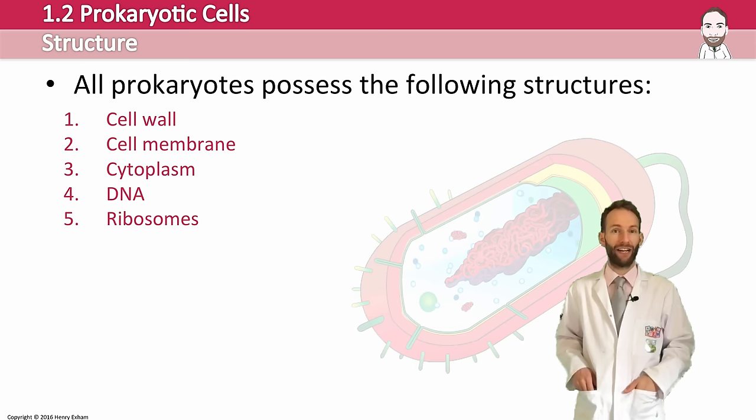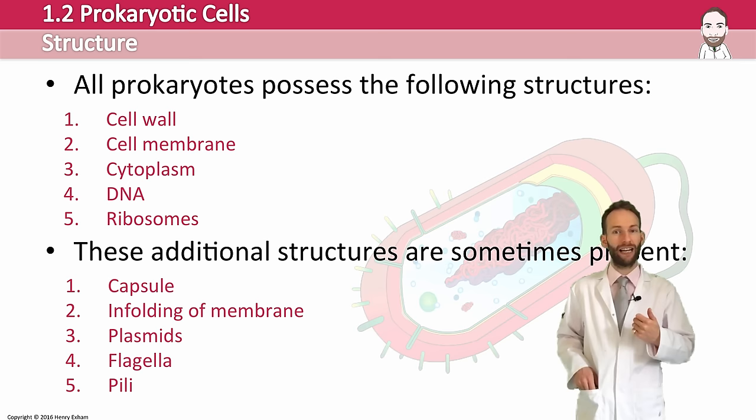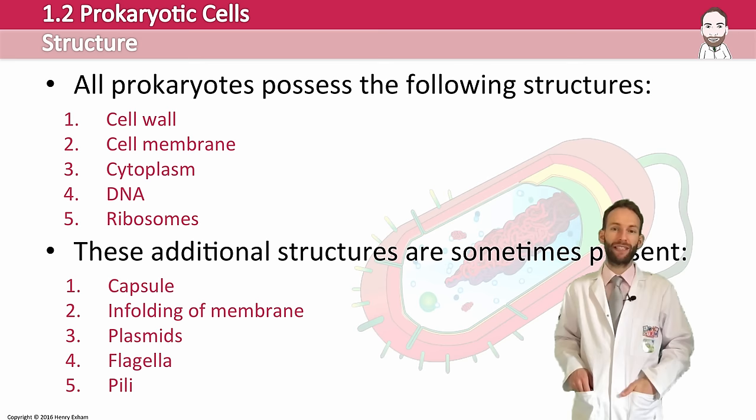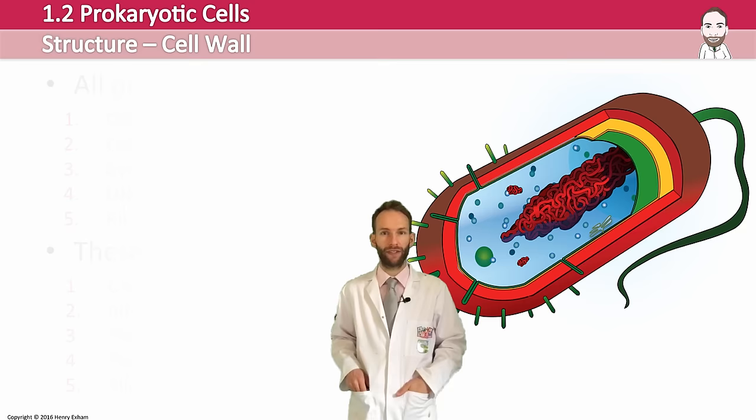Prokaryotic cells all possess a cell wall, a cell membrane, cytoplasm, DNA, and ribosomes. Some prokaryotic cells also contain a capsule, some have in-foldings of their membranes, some have plasmids, flagella, and pili. We'll cover all these structures in this presentation.